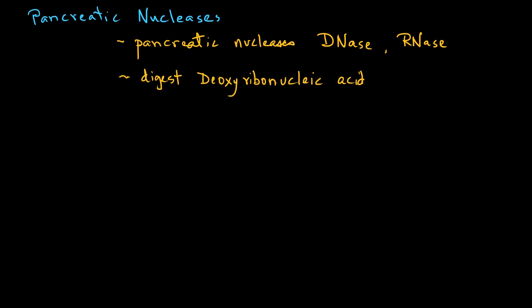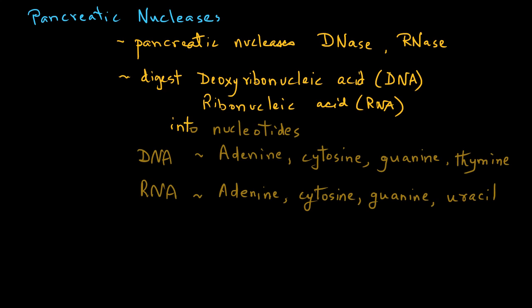Pancreatic juice also contains nucleases. Their purpose is to break down DNA and RNA present in the food. DNase helps digest deoxyribonucleic acid, and RNase helps digest ribonucleic acid into their respective nucleotides.